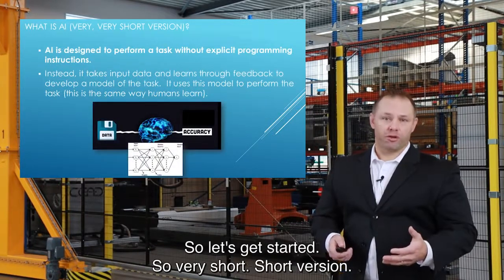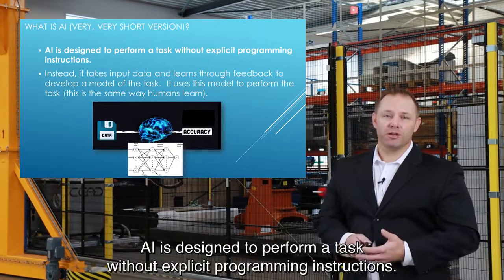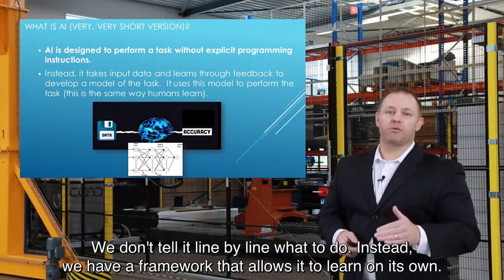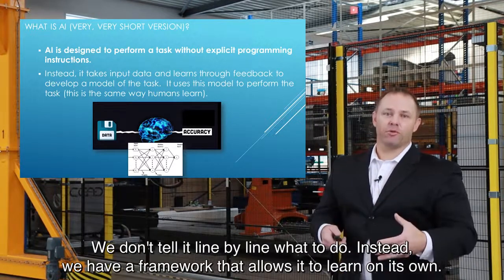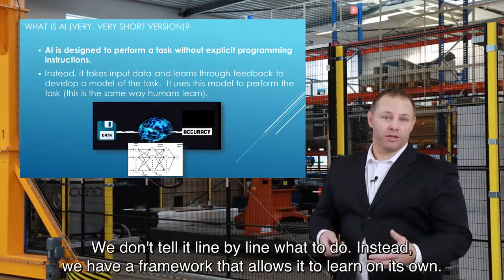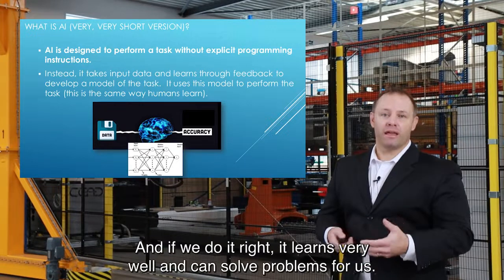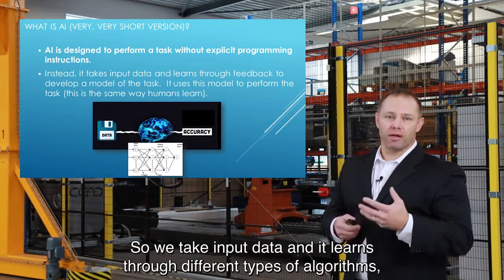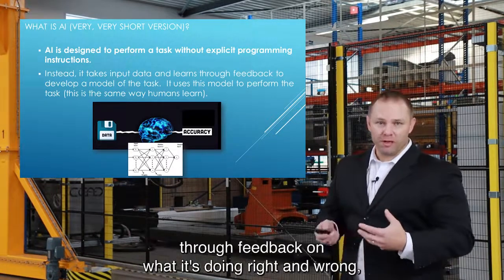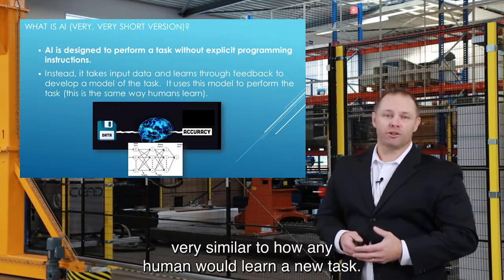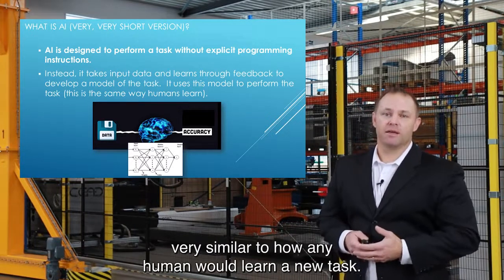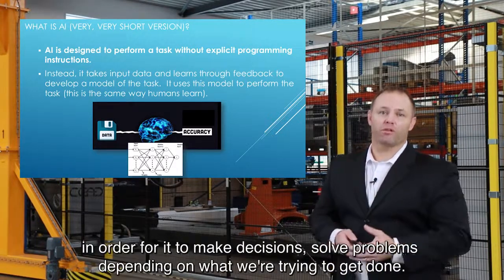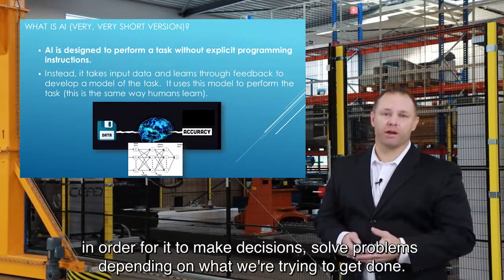AI is designed to perform a task without explicit programming instructions. We don't tell it line by line what to do. Instead, we have a framework that allows it to learn on its own, and if we do it right, it learns very well and can solve problems for us. We take input data and it learns through different types of algorithms, through feedback on what it's doing right and wrong — very similar to how any human would learn a new task. That becomes a model that we then feed new information in order for it to make decisions and solve problems.